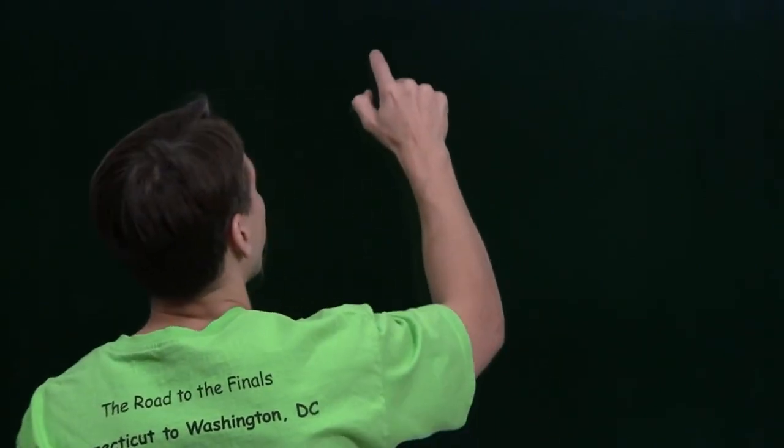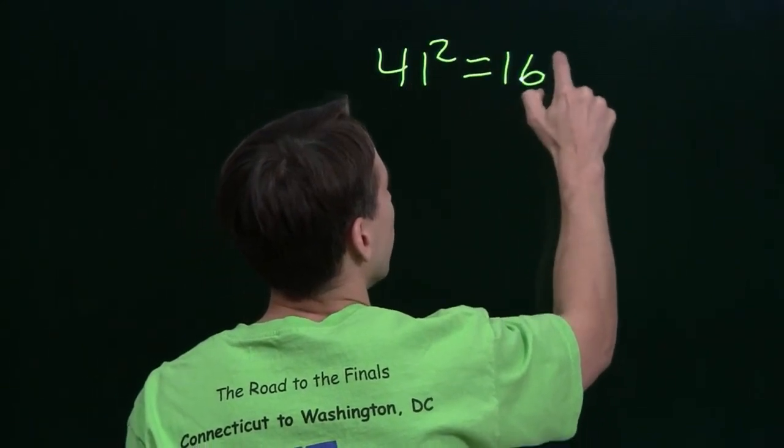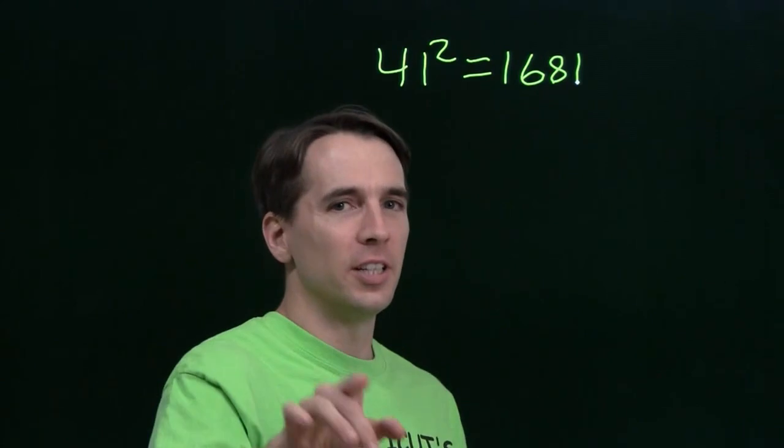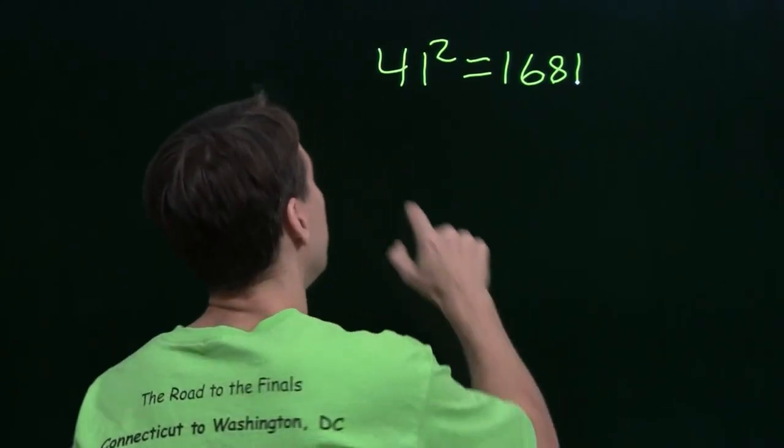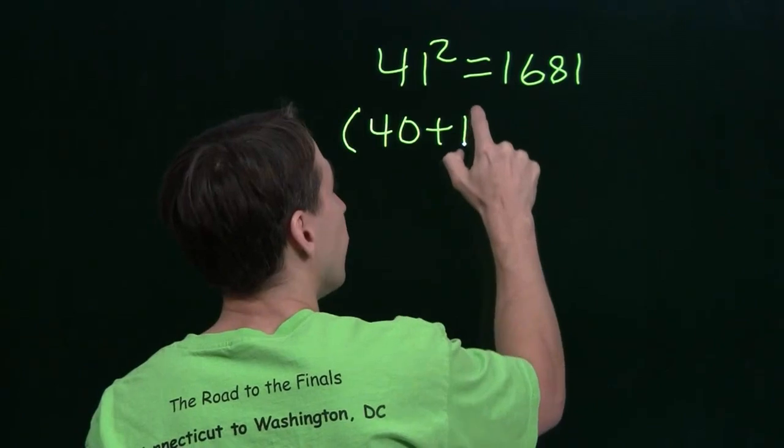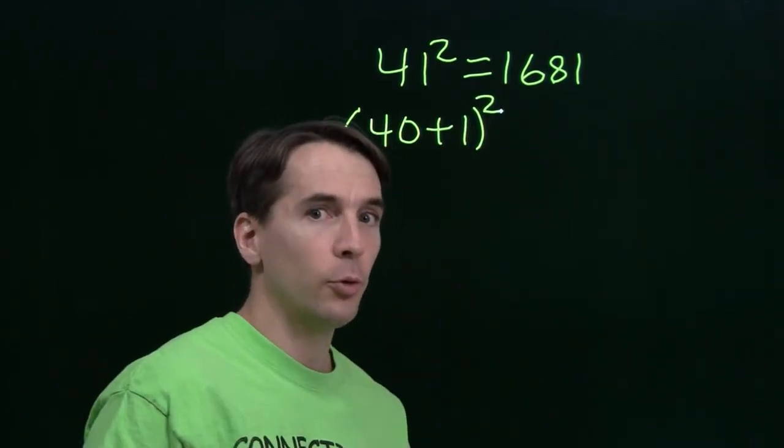Yeah, I know what you're here for. You're here for my super-secret squaring trick. Now, in the last video I mentioned that 41 squared is 1681, and I said I had a super-secret way to figure this out. I even gave you a hint. I noted that 41 is 40 plus 1, so I could just square this sum, and I'd get 41 squared.